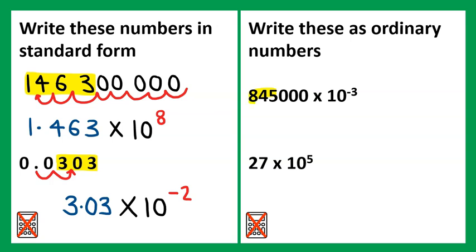Writing these as ordinary numbers. 845,000 is being raised to the power of negative 3. So this would shift the decimal point 1, 2, 3. So the final answer would be 845.